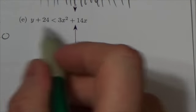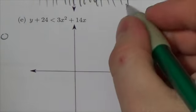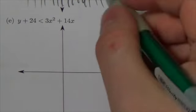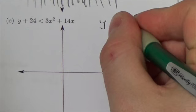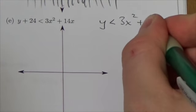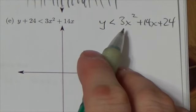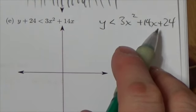Alright, 18e. A little bit more going on with this problem. So what I want to do first is, I'm making sure I got some room here, I'm going to move that 24 over to the other side of the equation. And so this is what I get. So y is less than 3x squared plus 14x plus 24.